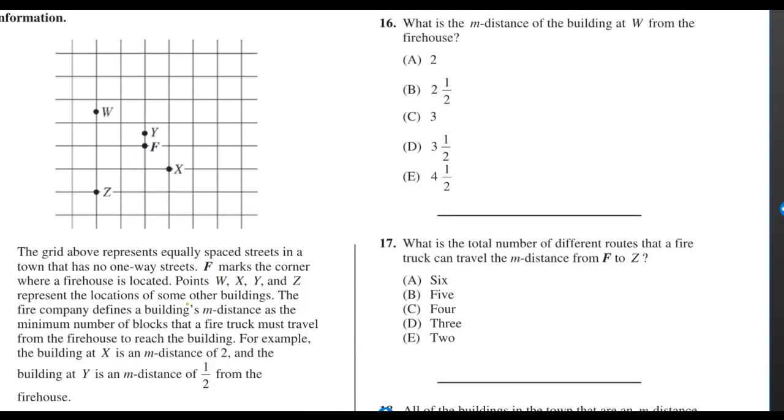The fire company defines a building's M distance as the minimum number of blocks that a fire truck must travel from the firehouse to reach the building. For example, the building at X is an M distance of 2, and the building at W is an M distance of 1 half.